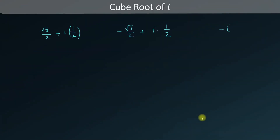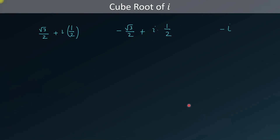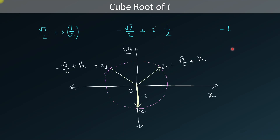So the cube roots of the complex number iota are: √3/2 + i/2, negative √3/2 + i/2, and −i. We can represent these complex numbers geometrically on a unit circle of radius 1, where z1 = −i, z2 = √3/2 + i/2, and z3 = −√3/2 + i/2.